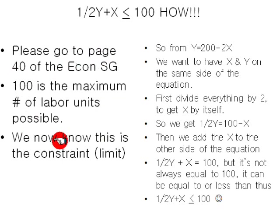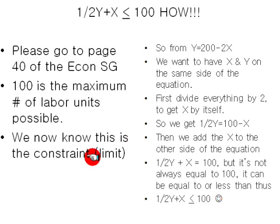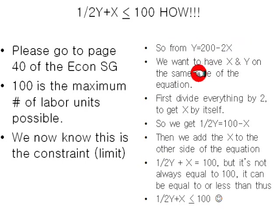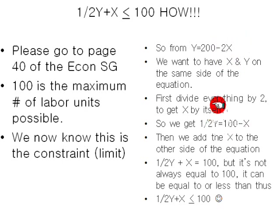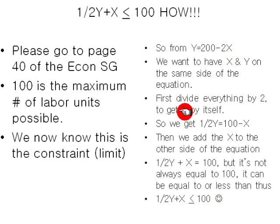So regardless of how many units you can make, 100 is the maximum number of labor units possible. And this is a constraint — another word for limit, a fancy way of saying limit. So from Y equals 200 minus 2X, we want to have X and Y on the same side of the equation. First, let's divide everything by 2. Divide the 2X by 2, that's X. Divide the 200 by 2, that's 100. Divide the Y by 2, that's 1 half times Y, or Y over 2.